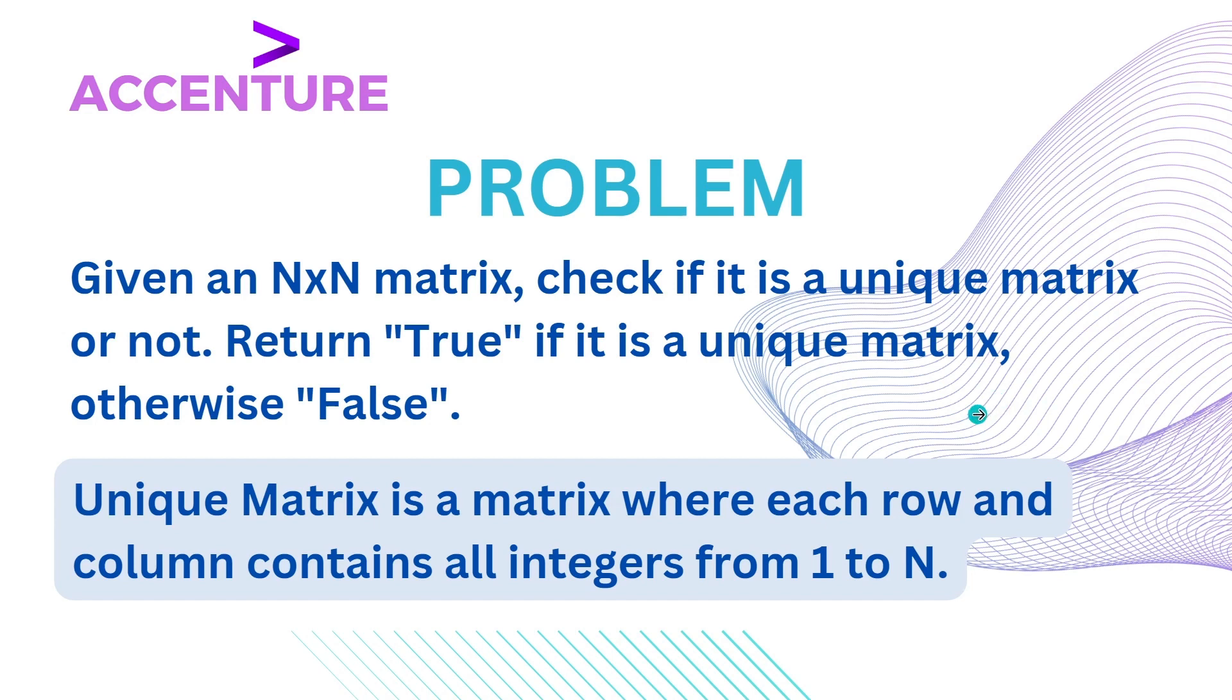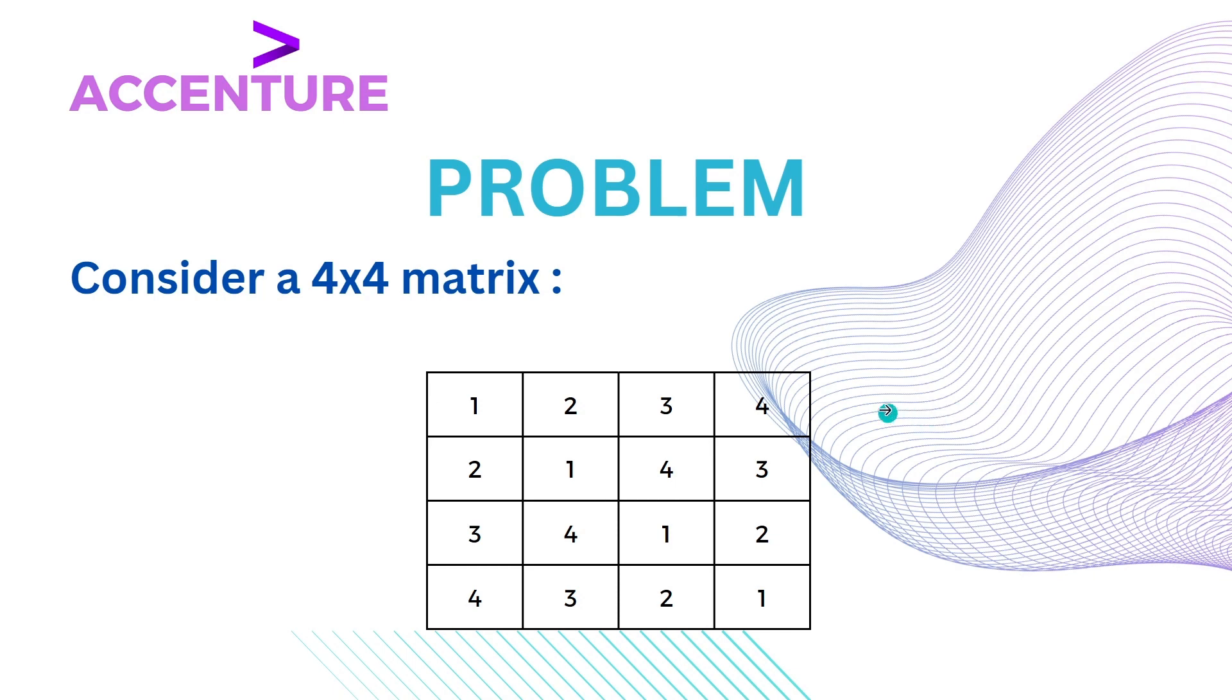That means if we have a 3x3 matrix, then for it to be a unique matrix every row and column of that matrix must contain all the numbers from 1 to 3. So let's take an example to understand it more clearly.